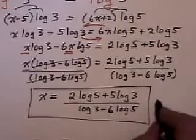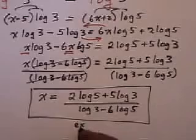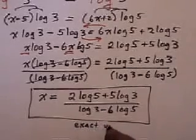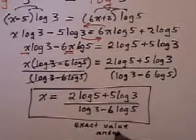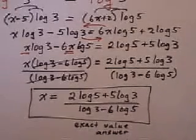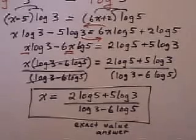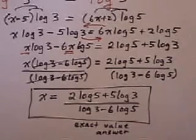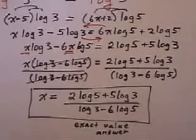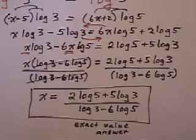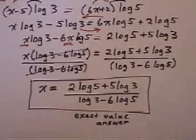Now, when you write an answer like that and still keep the word log in, we call that an exact value answer. Okay. If you were to take your calculator and work that all out and get it to a certain number of decimal places, then your question would say leave it to three decimal places or solve. But if they say solve and leave an exact answer, then what we do is we leave it in that form. Okay.